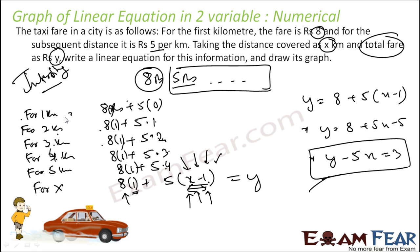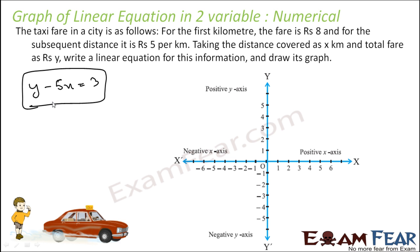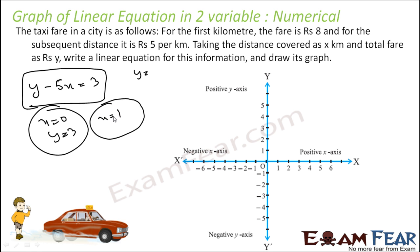You can actually draw the graph for this as well. The equation we derived was y minus 5x is equal to 3. Let's put x equal to 0 — y becomes 3. That is one point. Let's put x equal to 1 — y minus 5 is 3, so y becomes 8. Two points are enough to draw a line, so I don't need a third.